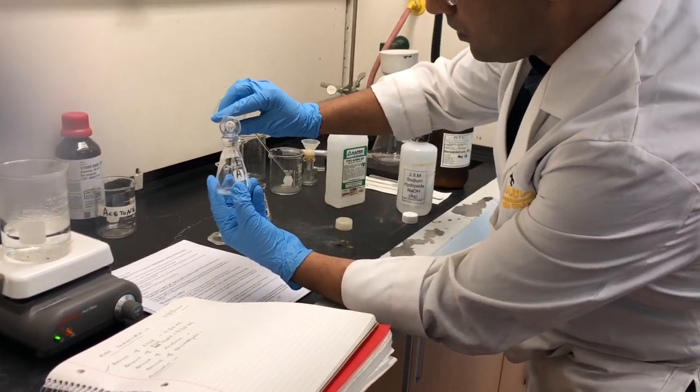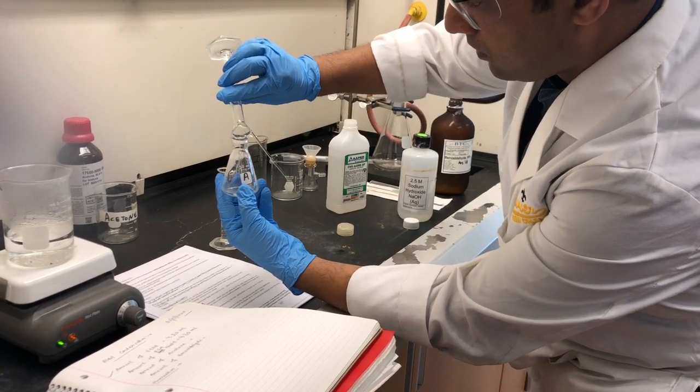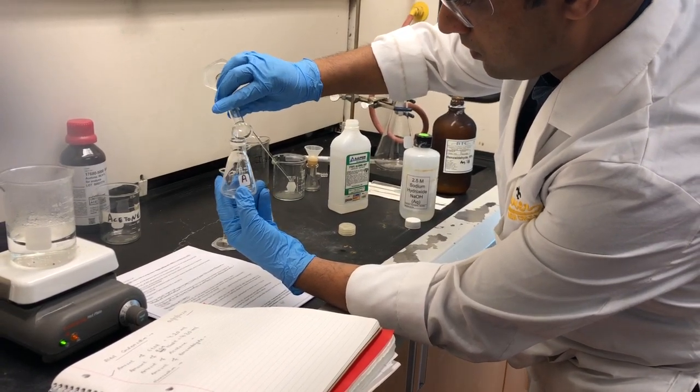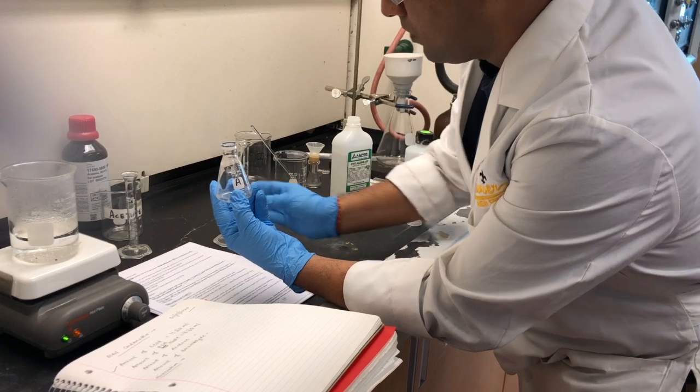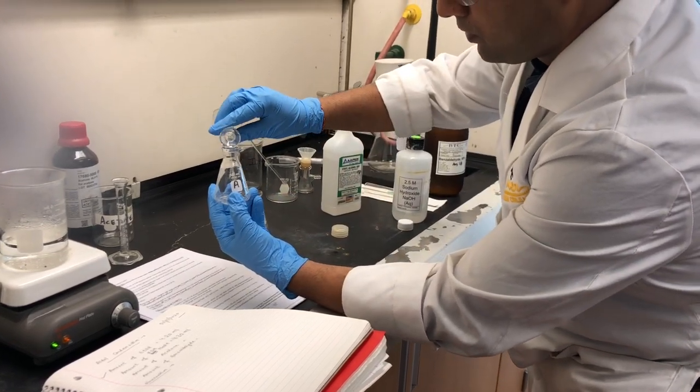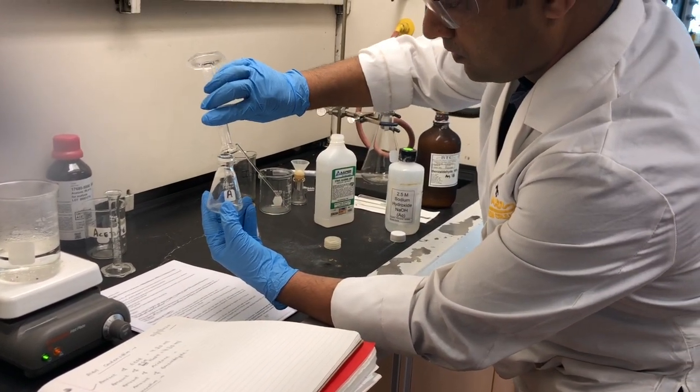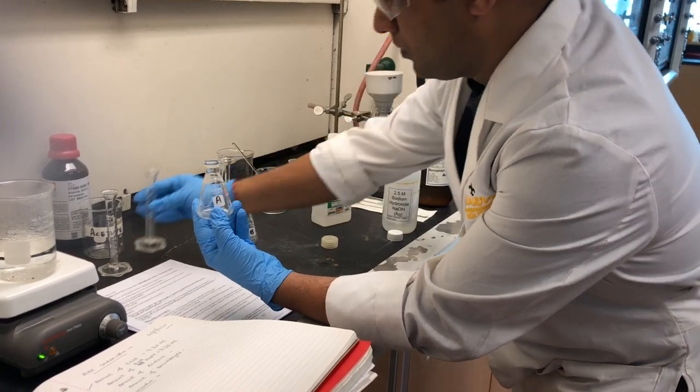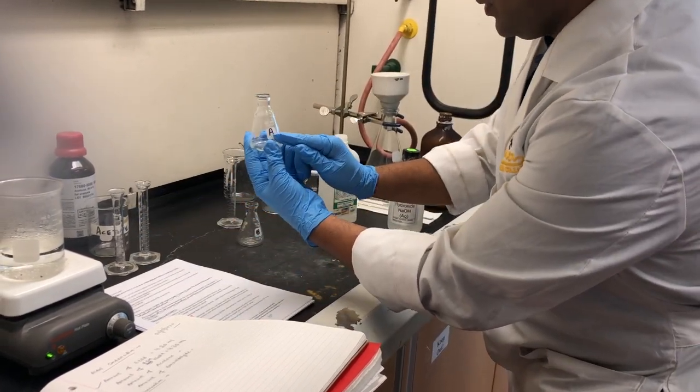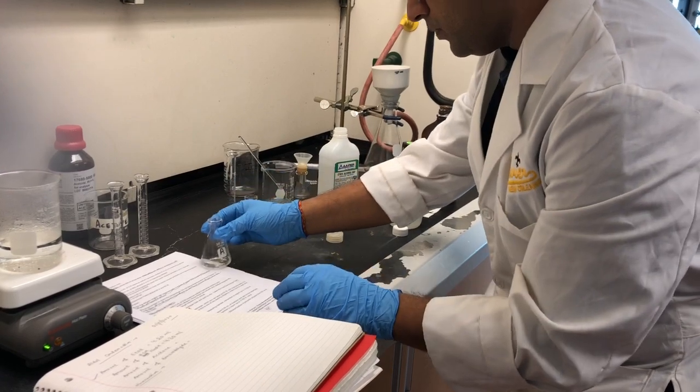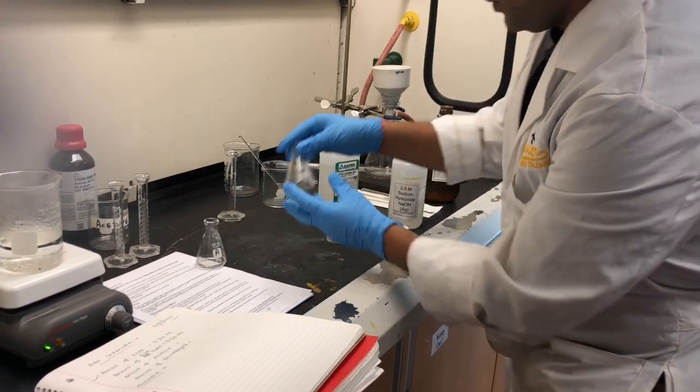I add ethanol and sodium hydroxide both in aluminaire flask A. And I keep the flask on the side, which has been labeled A.